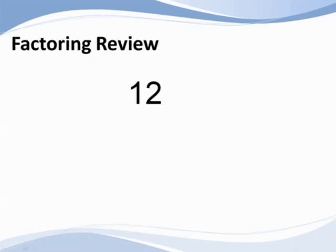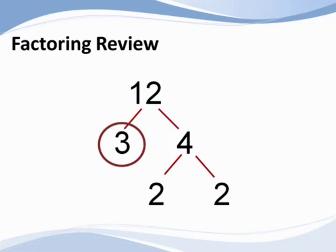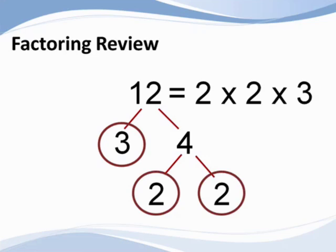Let's quickly review the concept of factoring any number to the product of its primes using a factor tree. Suppose you were asked to factor twelve. Twelve is equal to three times four. Since three is prime, we circle it. Four can be factored into two times two. Again, both twos are circled since they are prime. So twelve is equal to two times two times three. If you need further review, please go back to the lesson on prime factorization.